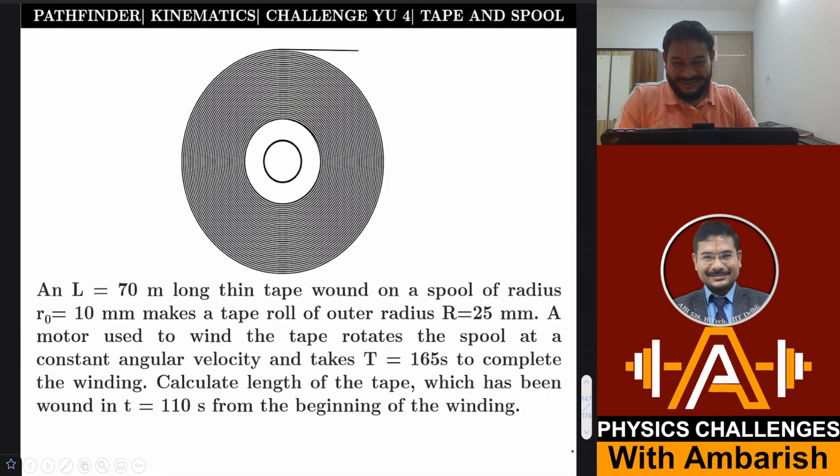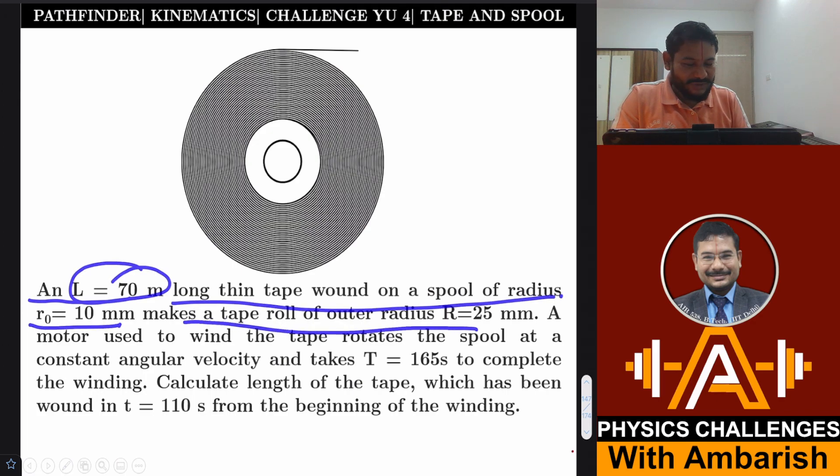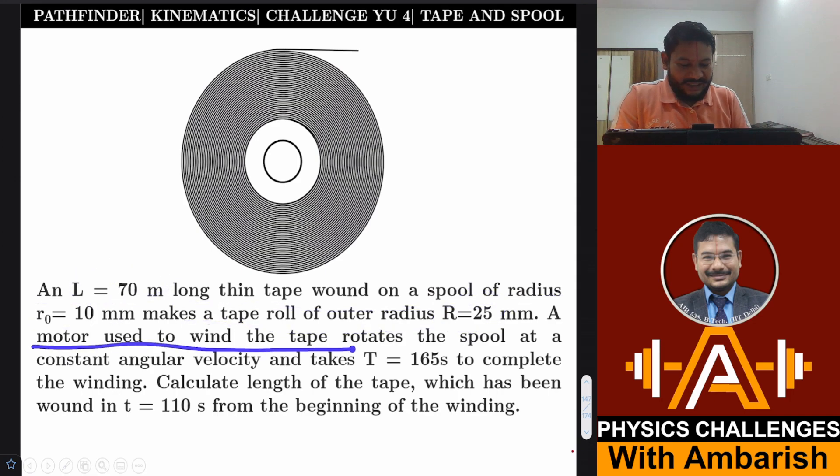It's a very interesting problem from Pathfinder, from the Challenger Understanding Kinematics section. An L equals 70 meter long thin tape wound on a spool of radius 10 mm makes a tape roll of outer radius 25 mm. A motor used to wind the tape rotates the spool at constant angular velocity and takes 165 seconds to complete the winding. So Omega is constant and the tape is being wound. Calculate the length of the tape which has been wound in t equals 110 seconds from the beginning of the winding.